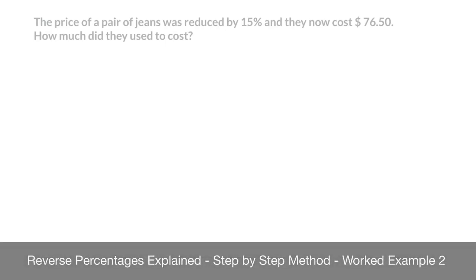We now look at a second example of a reverse percentage problem, in which we're told that the price of a pair of jeans was reduced by 15%, and they now cost $76.50. We're then asked, how much did they used to cost?